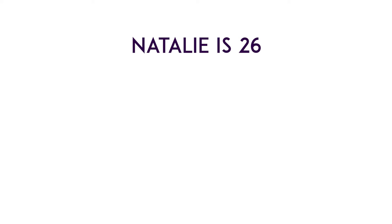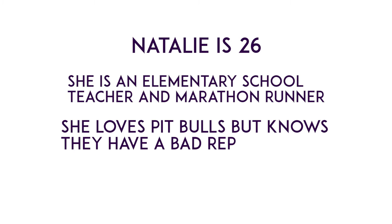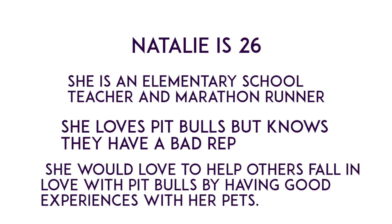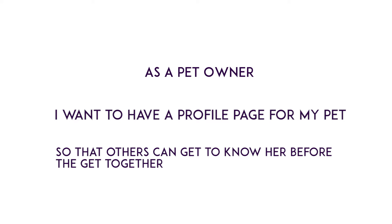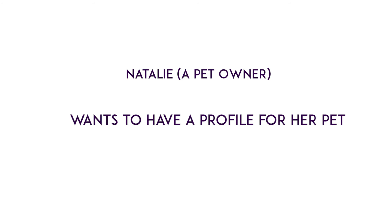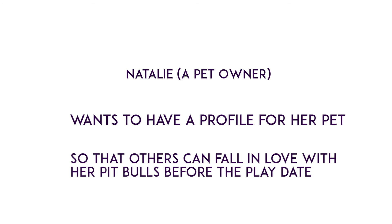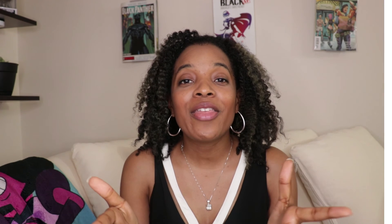Now, looking back at all the work we've done for this fictitious application called Sniffs and Wolves, you should have a great workflow to get started. The persona: Natalie is 26, an elementary school teacher and a marathon runner who loves pit bulls and wants to help others fall in love with them through good experiences with her pets. The epic: to allow the customer to manage his or her own account for their pet. The user story: as a pet owner, I want to have a profile for my pet so that I can share stories before the get-together. Or with the persona — Natalie, a pet owner, wants to have a profile for her pet so that she can share stories with other users and they can fall in love with that pet before the playdate. At this point, you should be able to create your own personas, epics, and user stories for your own application.